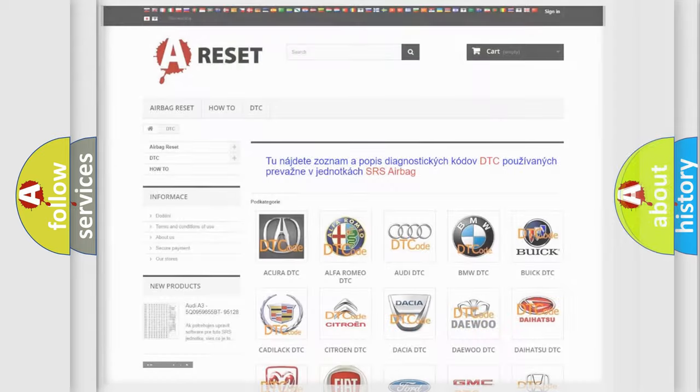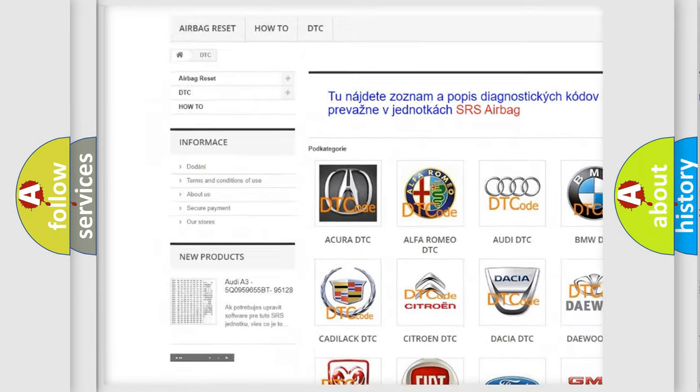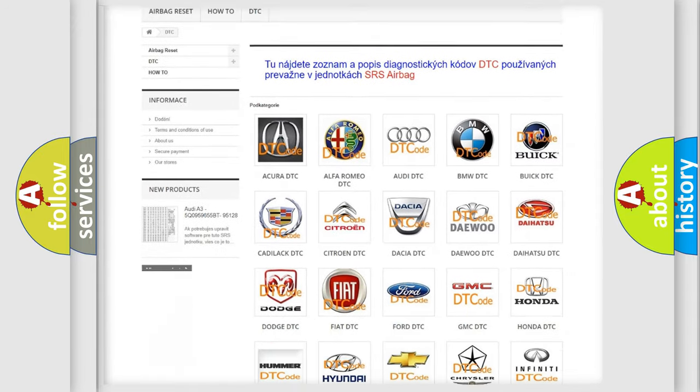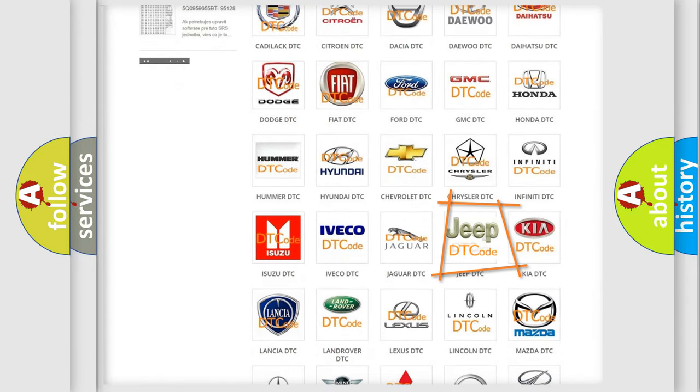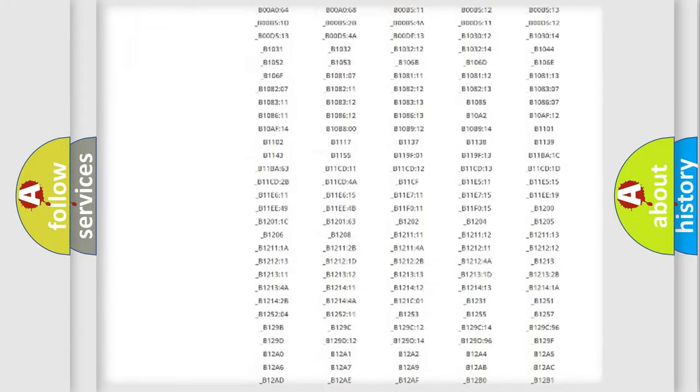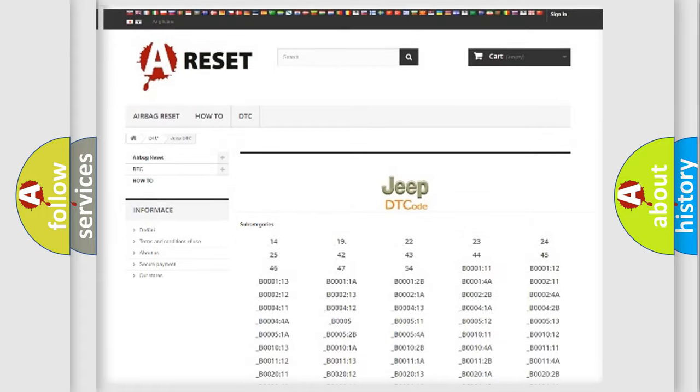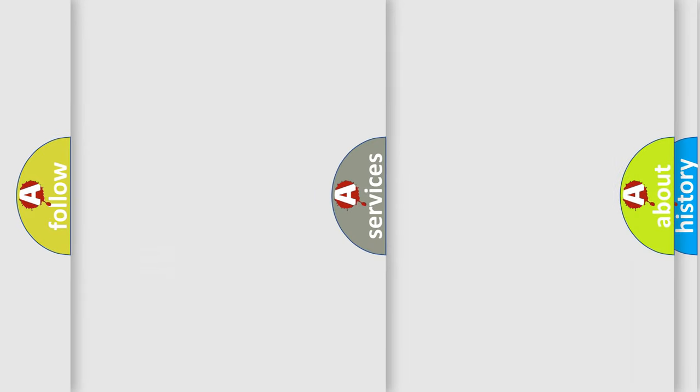Our website airbagreset.sk produces useful videos for you. You do not have to go through the OBD2 protocol anymore to know how to troubleshoot any car breakdown. You will find all the diagnostic codes that can be diagnosed in Jeep vehicles, and many other useful things.